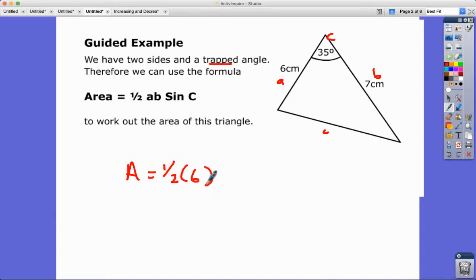We just need to be really careful and make sure that our calculator is set to degrees. We just put that in: 0.5 times 6 times 7 times sine 35 gives us an answer of 12.0.